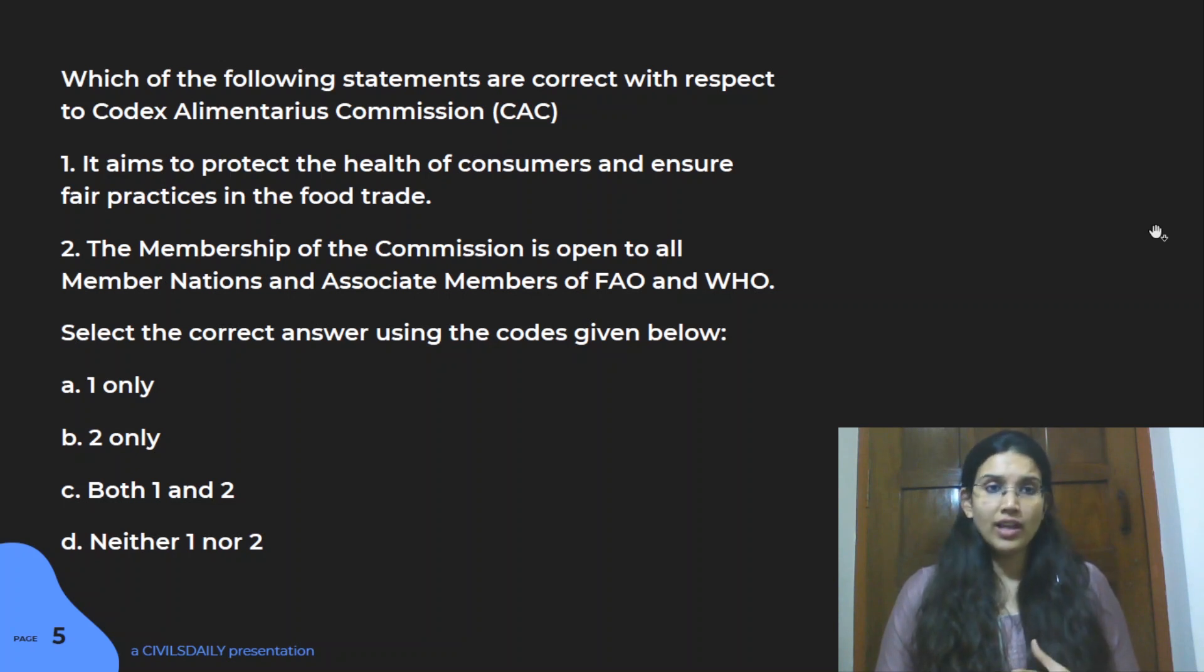So yes guys, the answer is C. Both the statements are right. And the basic idea here is to revise all the initiatives that are there under FAO. There are a lot of different other elements also. You can go and look for all the schemes and programs that are running under FAO. And Codex Alimentarius is basically dealing with your food standards. And all those ideas are basically talked about here. So this was your fourth question of the day.